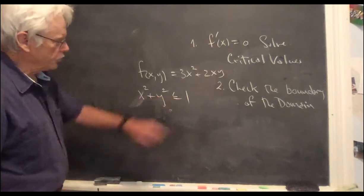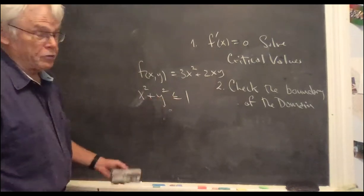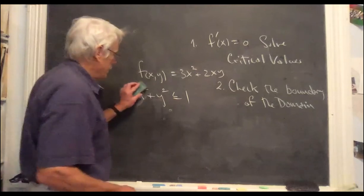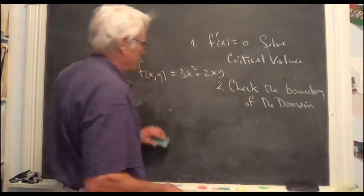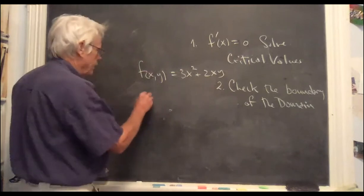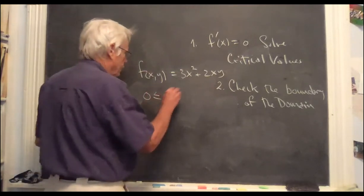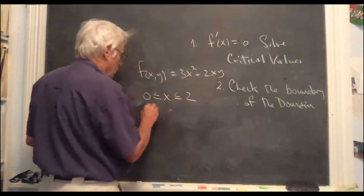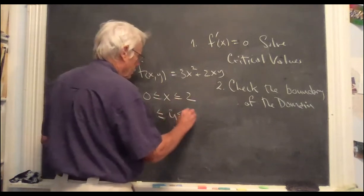f of x and y equals 3x squared plus 2xy. What is the maximum minimum of this function on this domain? This is a circular domain and we'll deal with this. But it's easier if you begin with a rectangular domain in the beginning, say, zero less than or equal to x less than or equal to two, one less than or equal to y less than or equal to three.